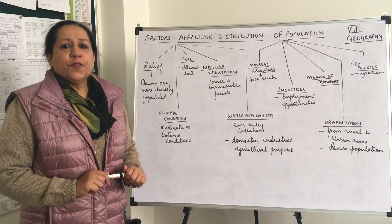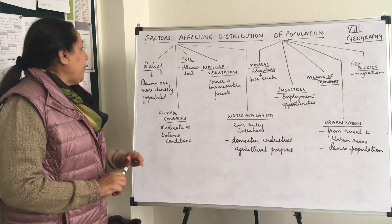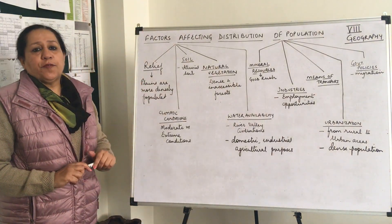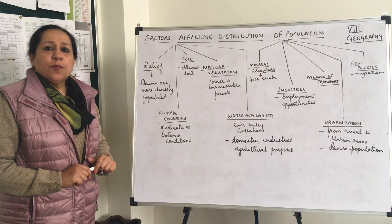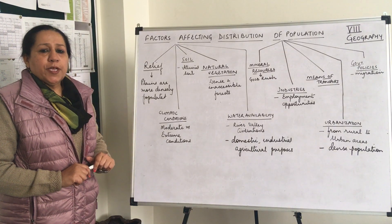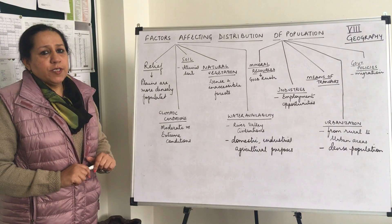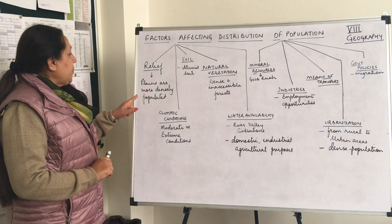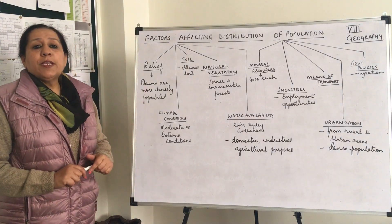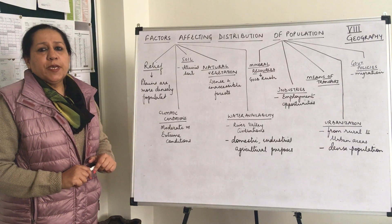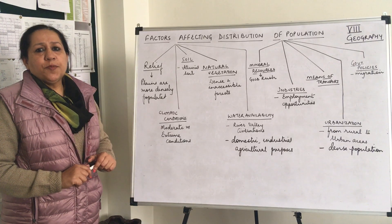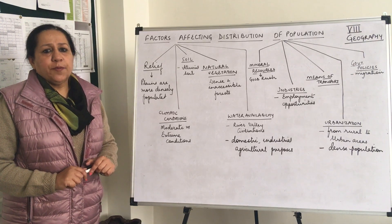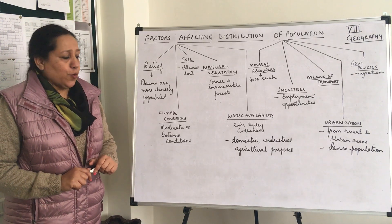Let's discuss the factors which affect the distribution. The first factor is relief. Plains are more densely populated than mountainous areas or areas with steep slopes. That is because plains are level, agriculture can be easily practiced, and means of transportation and other construction activities can be easily carried on.